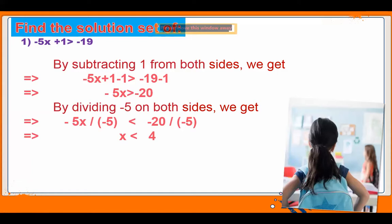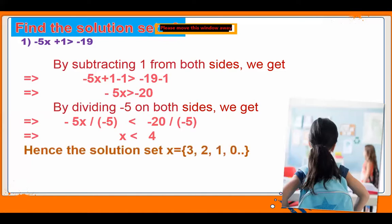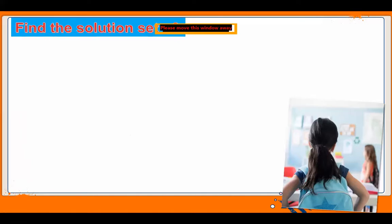So x is less than 4 means on the number line we move to the left hand side of 4. The solution set is 3, 2, 1, 0 and so on.